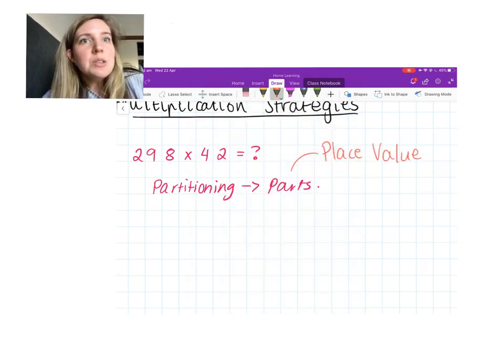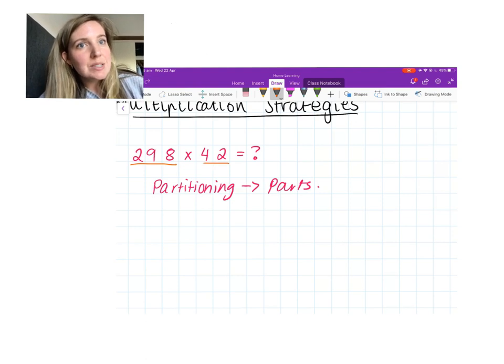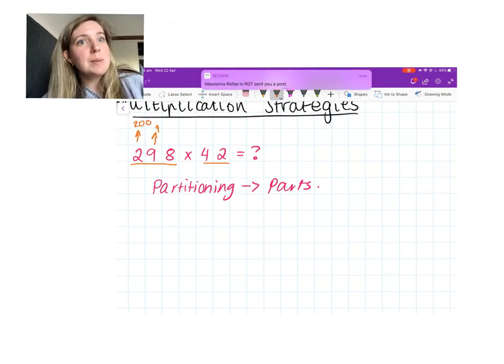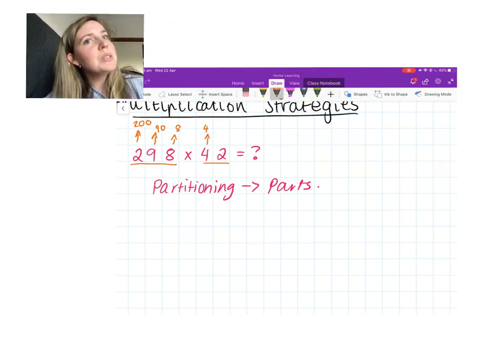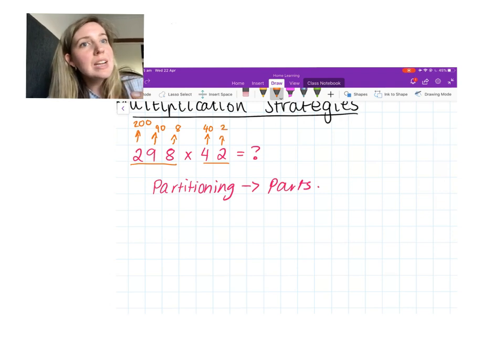Place value parts basically means what is the number made up of. Here I have 298 times 42. So I'm going to split my 298 into 200, 90, and 8. And my 42 I'm going to do the same thing—I've got 40 and 2.